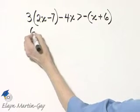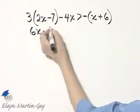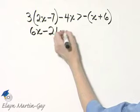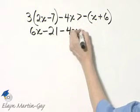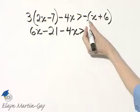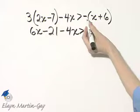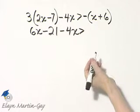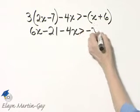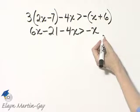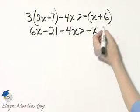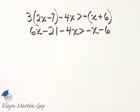3 times 2x, that's 6x, minus 21 minus 4x is greater than, if you'd like, you can think of that as negative 1, negative 1 times x is negative 1x, or simply negative x, and then negative 1 times a positive 6 is negative 6. I'll write minus 6.